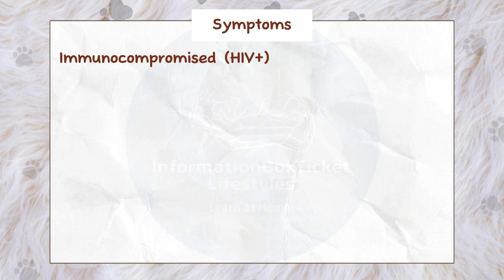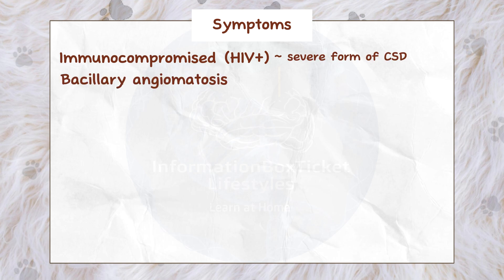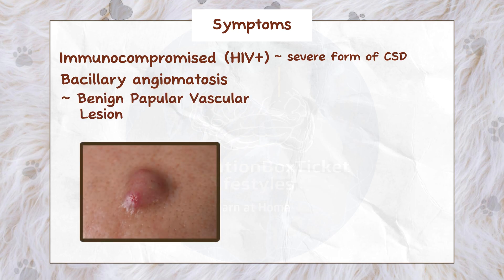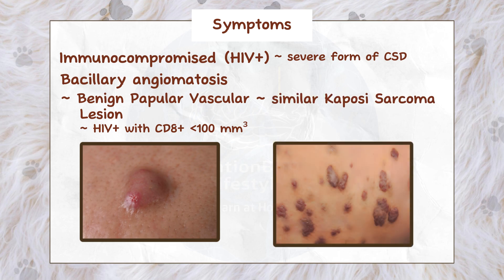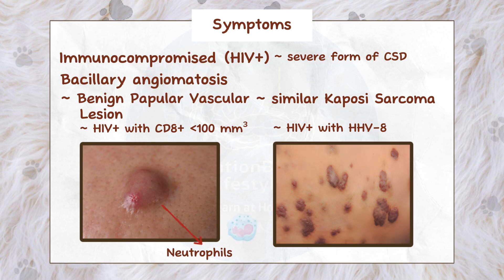Immunocompromised people, such as those living with HIV, are more likely to develop bacillary angiomatosis, a severe type of cat scratch disease. Bacillary angiomatosis is characterized by endothelial cell proliferation that results in benign papular vascular lesions on the skin. This is most frequent in HIV-positive patients with a CD4+ cell count of fewer than 100 per cubic millimeter of blood. These skin lesions are very similar to those seen in Kaposi's sarcoma, an endothelial cancer that typically occurs in HIV-positive persons infected with human herpesvirus type 8. The primary distinction between the two lesions is the type of inflammatory cell present: in bacillary angiomatosis, the inflammation is predominantly composed of neutrophils, whereas in Kaposi's sarcoma, the inflammation is composed of lymphocytes.